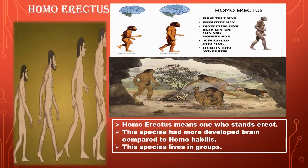Homo erectus marks an important stage in human evolution. Erectus means the one who stands erect - it also means upright man. Comparing Homo erectus to Homo habilis, they had a more developed brain, as shown on your slide. The features of Homo erectus include a low brain case, a receded forehead, and wide nose, jaws and palate. The brain was smaller and teeth larger than in modern humans. As compared to Homo habilis, Homo erectus brains were much more developed.